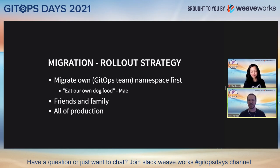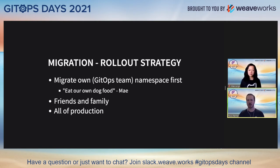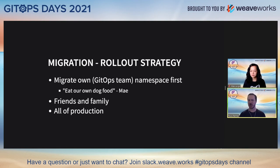With the plan set, we needed a rollout strategy. The first thing we did was migrate our own GitOps team namespace first — as May likes to say, we ate our own dog food. We wanted to test the plan, make sure it worked and wouldn't cause any bugs. If something went wrong, we were in the best position to analyze and fix it. Luckily, everything worked as we expected.